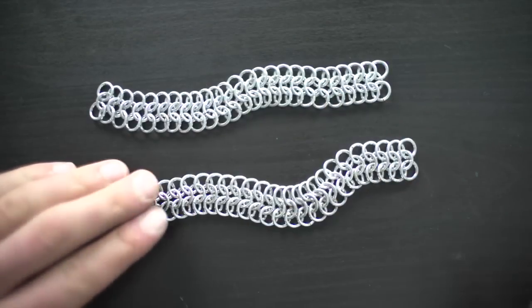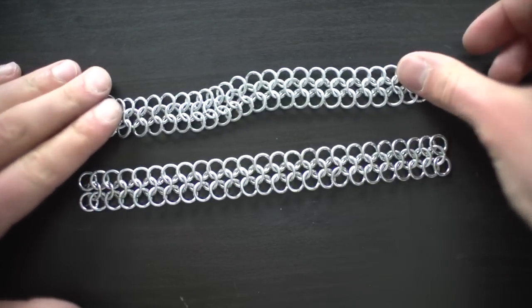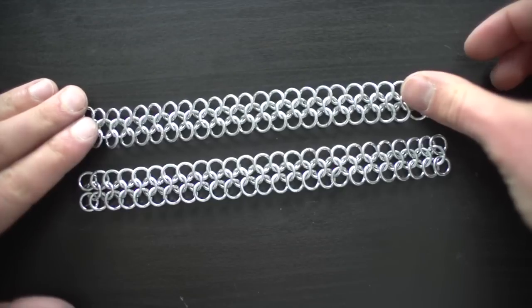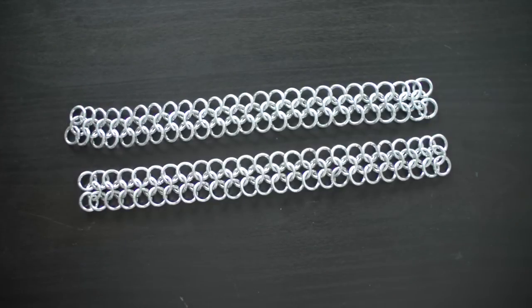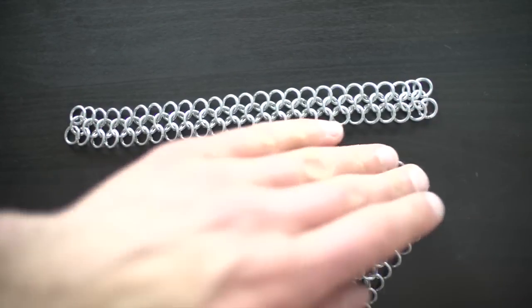You're going to make a second chain, the exact same way, that's also 24 center rings long. Line up these two chains so that the center rings are lying in the same direction.